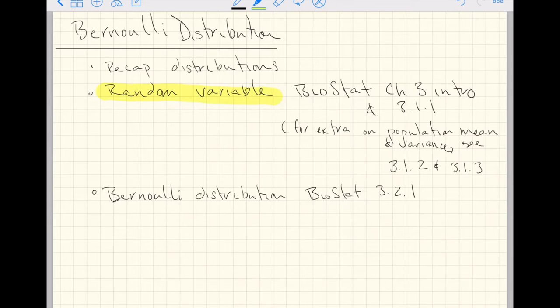And then continue on to the subsection 3.1.1. And if you want to at least see the math behind some of the details of distributions, continue on to sections 3.1.2 and 3.1.3. But I would ask that you at least do up to and including section 3.1.1. So then we'll start into the Bernoulli distribution after we introduce a random variable. And the subsection you can read for the Bernoulli distribution is in the same Biostat book, section 3.2.1.